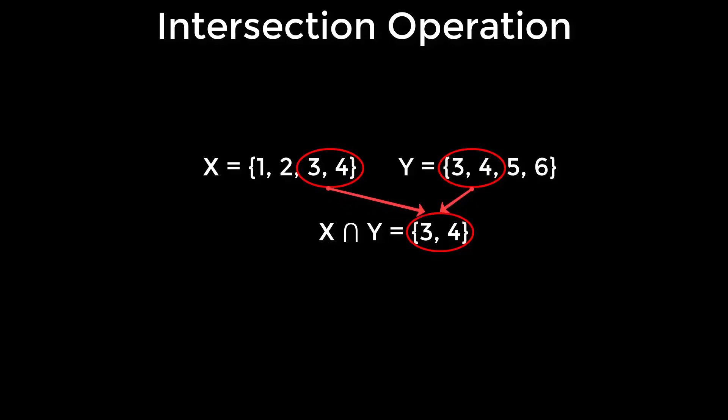In other words, intersection operation generates a set from X and Y whose elements are the common elements of both of the sets. Here, 3 and 4 are common in both X and Y. That is why X intersection Y is a set of 3 and 4.